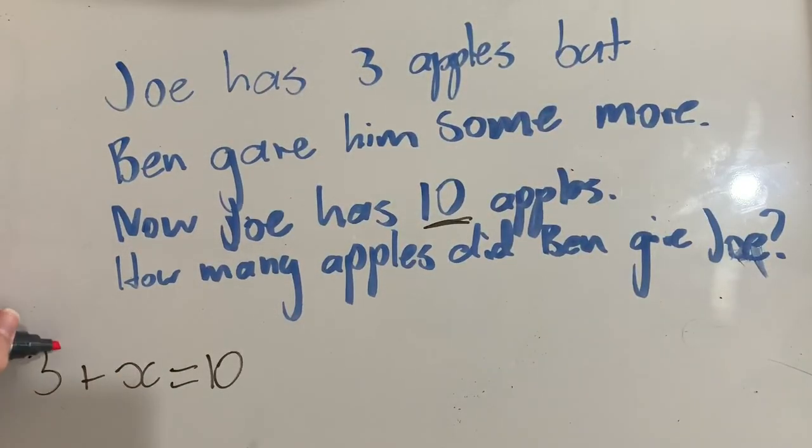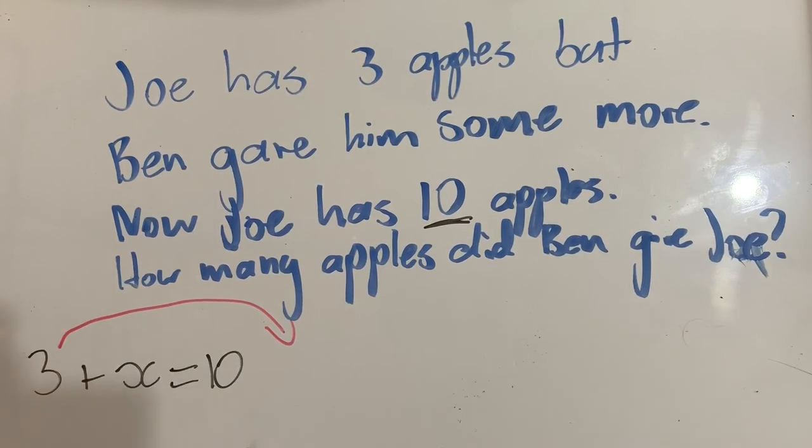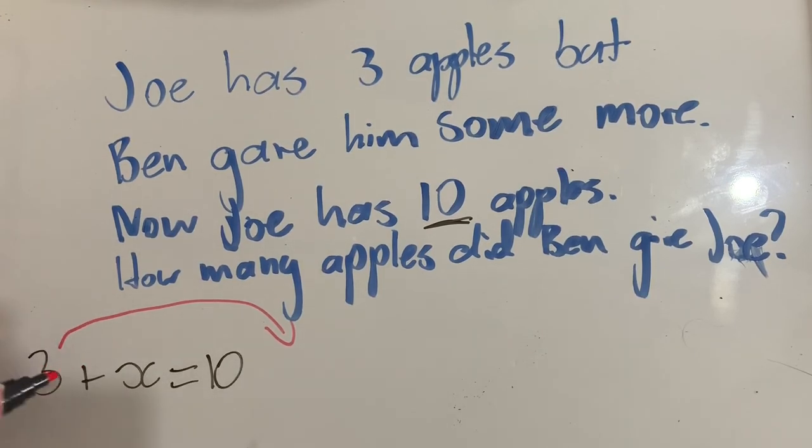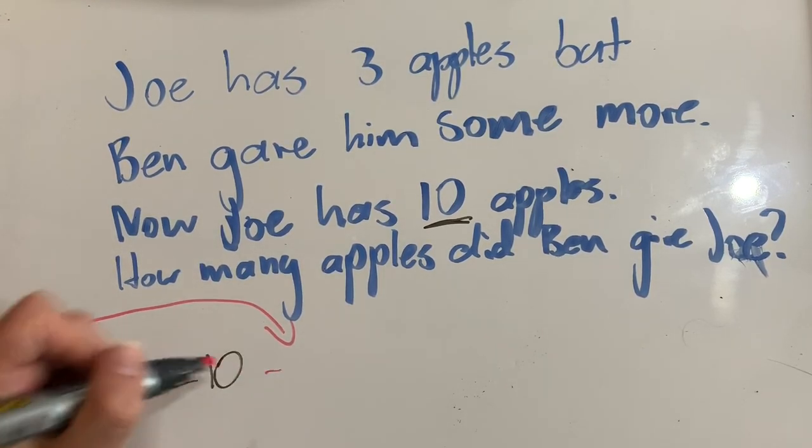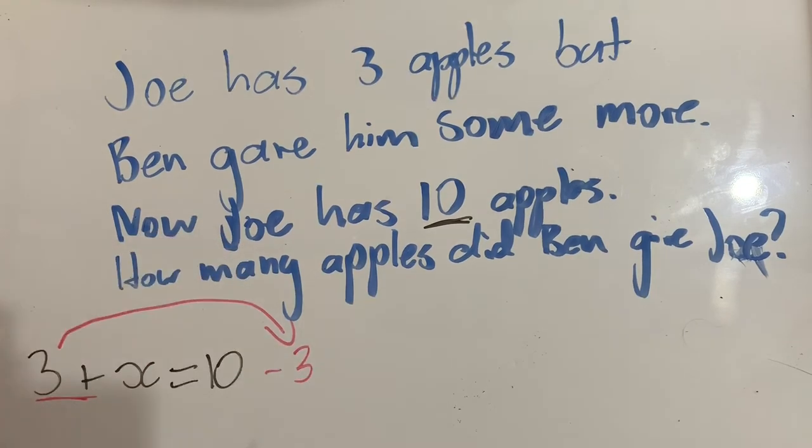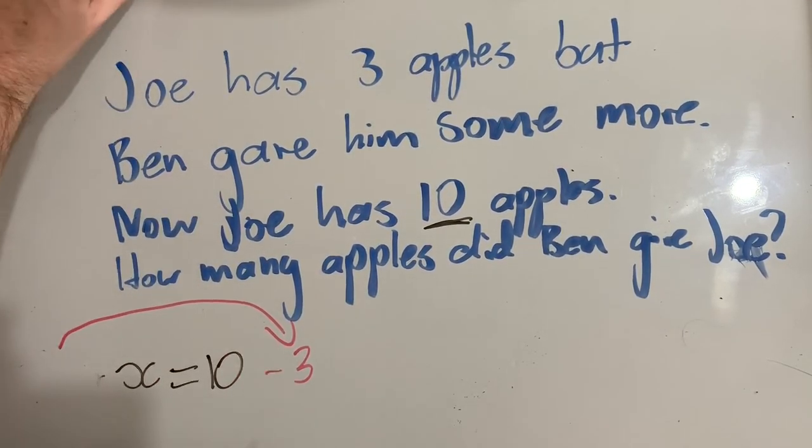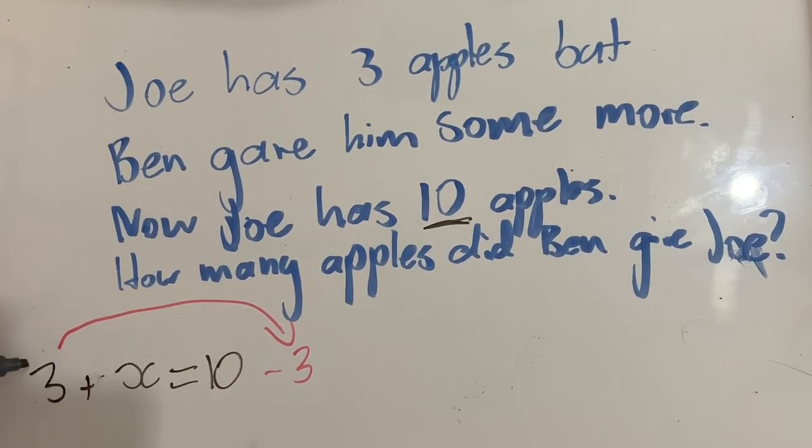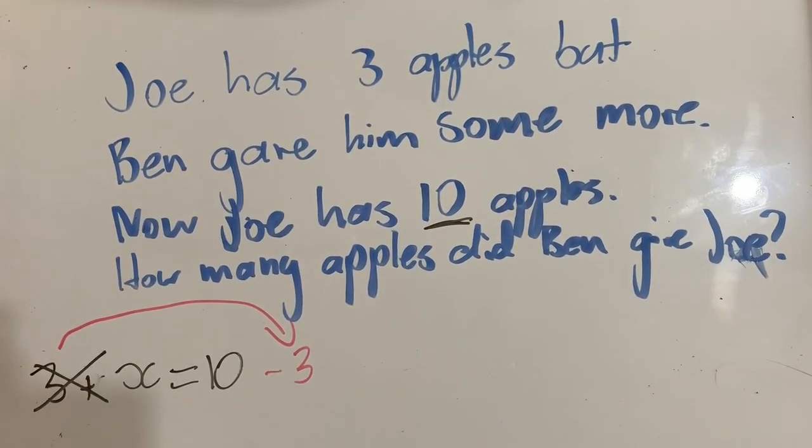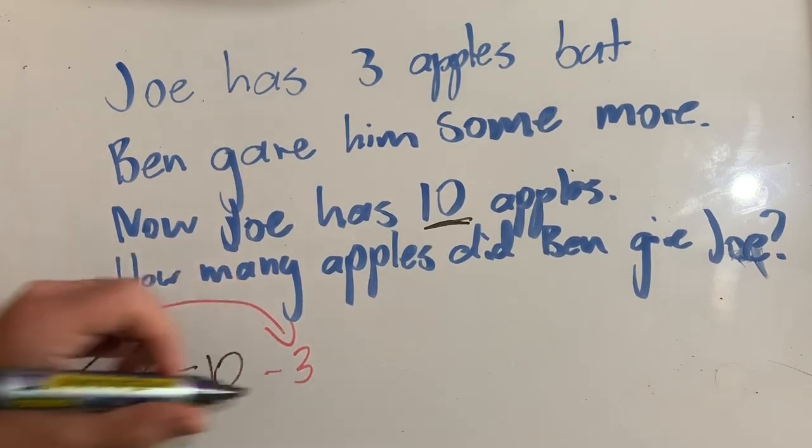So I'm going to jump it over. Now remember, whenever we jump anything to the other side of an equal sign, we need to use the inverse or opposite operation. So instead of adding three, we are subtracting three. Now that gets rid of all of that. I'll leave it there just so we can see what we did though. But I'll cross it out.